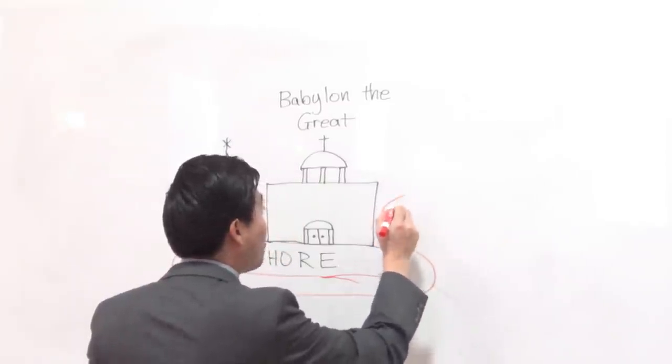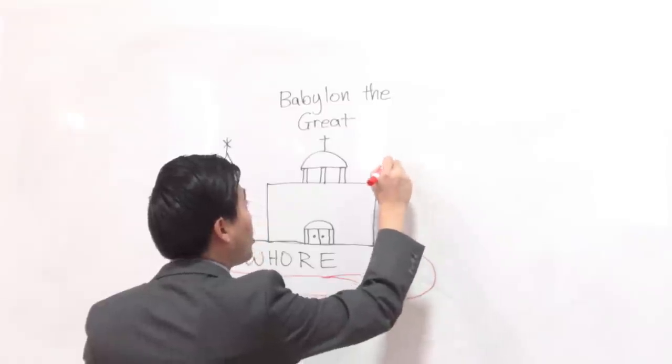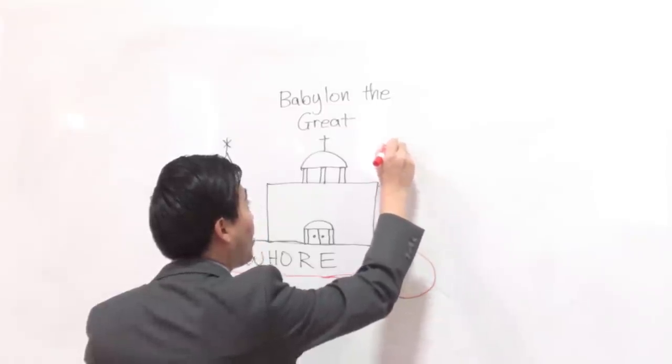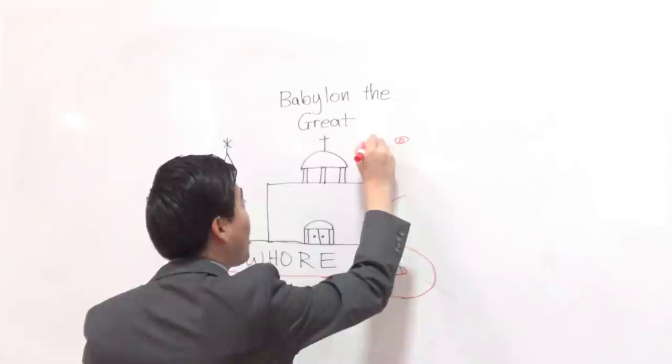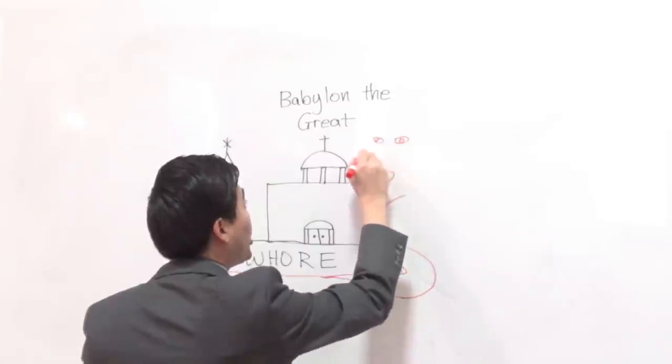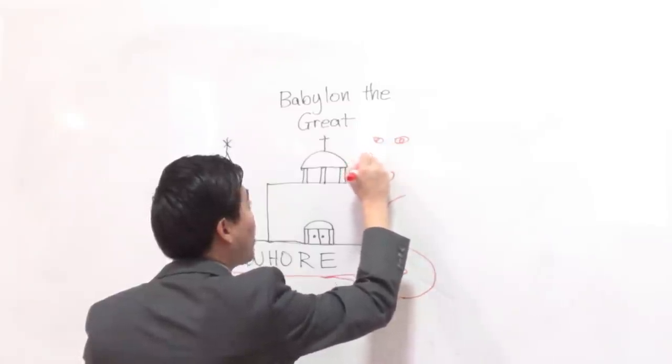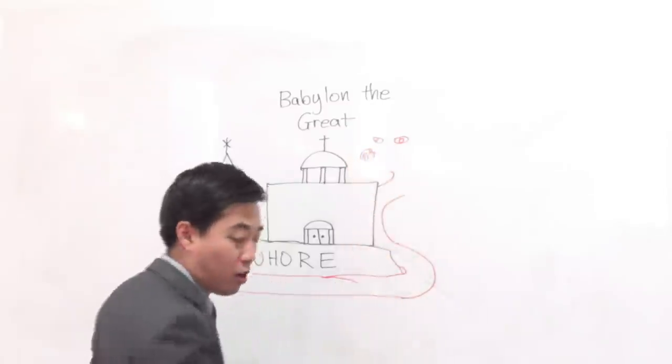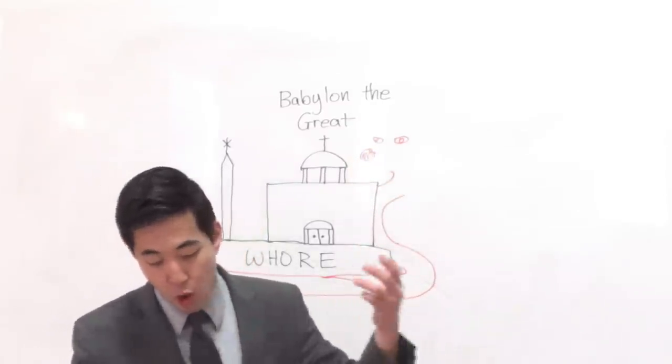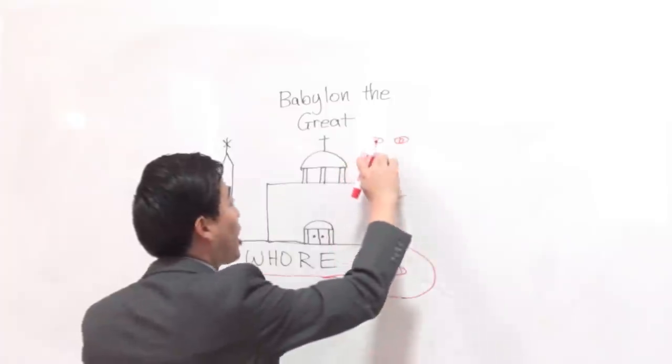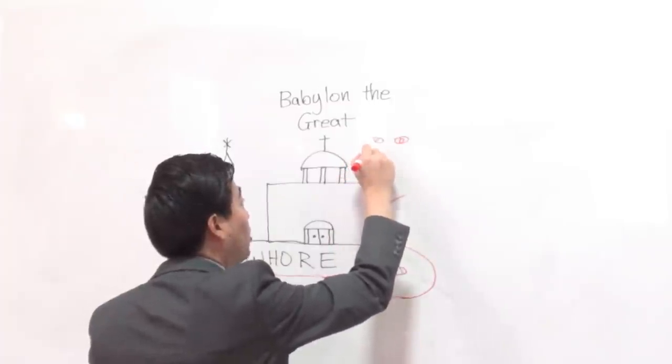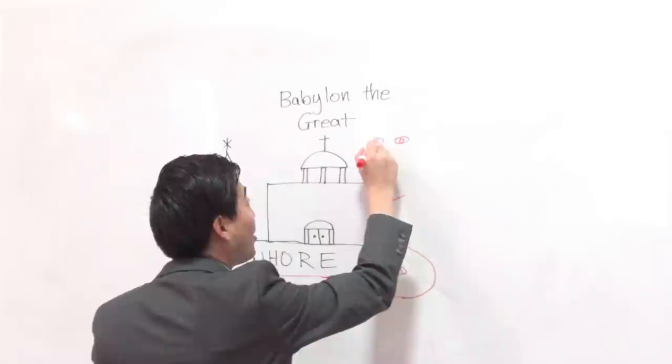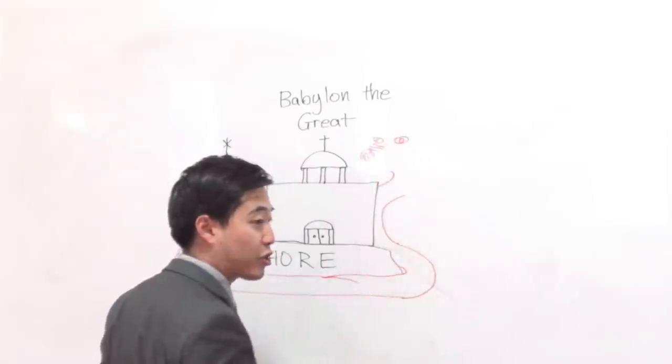We also saw many other references concerning about this great whore. We saw many other references about this great whore, where she is known as Mystery Babylon, and that also, that she has a golden cup. She's dressed up in scarlet and purple. I mean, what more do you need? I mean, that's plainly the Roman Catholic Church over here.